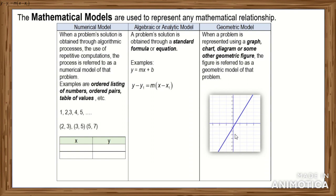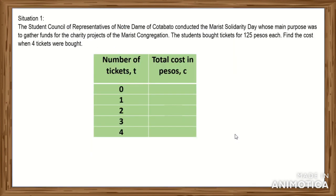Let's look at some real-life examples to realize the use of these mathematical models. Situation number 1: The Student Council of Representatives of Notre Dame of Cotabato conducted the Marist Solidarity Day, whose main purpose was to gather funds for the charity projects of the Marist congregation. The students bought tickets for 125 pesos each. Find the cost when 4 tickets were bought. Use this table of values to find the answer. Pause the video and solve it.